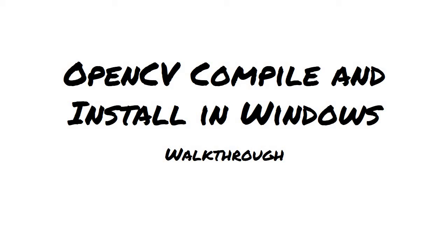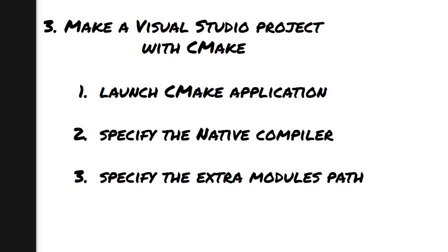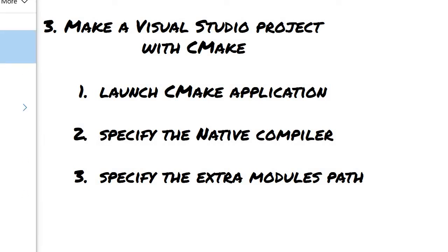In this part 2 of the OpenCV install, we're going to make the visuals to the project with CMake. First we're going to launch the CMake application, then specify the native compiler, and finally specify the extra modules path.